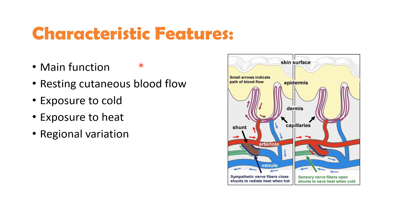The metabolic rate of the skin is relatively small, so a minimal amount of blood flow to the skin can supply the nutritive function. At rest, cutaneous blood flow is about 10 to 15 ml per minute per 100 gram of skin tissue. During exposure to cold, when sweating is minimal, the cutaneous blood flow falls to about one-tenth of the resting value, that is 1 ml per minute per 100 gram tissue. During exposure to heat, blood flow may increase 10 times to about 150 ml per minute per 100 gram tissue, which imposes a heavy circulatory load on the heart.